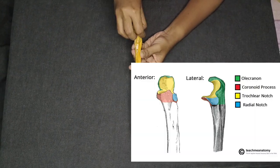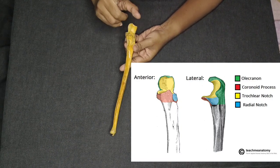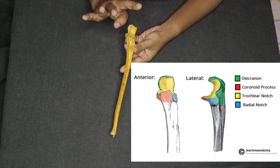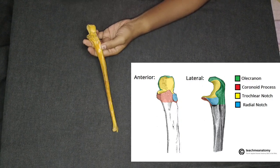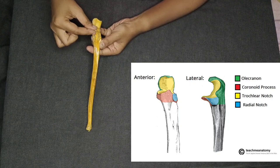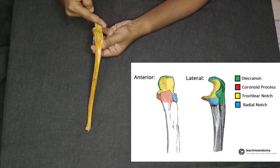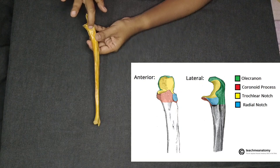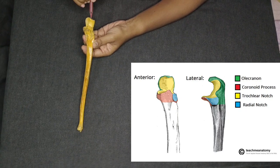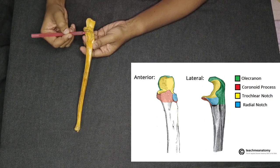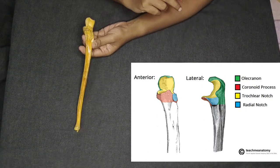Coming to the upper end — we need to study the upper end, shaft, and lower end. In the upper end, there are four structures to study: the olecranon process, the coronoid process, the trochlear notch, and the radial notch.